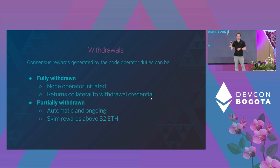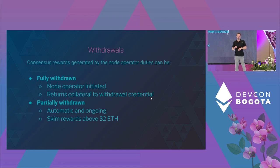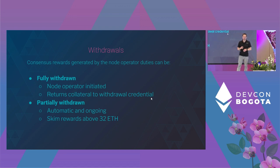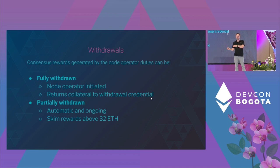A disclaimer: the information on this slide is not final — the Capella specification is still being drafted, but this is what it looks like. After the Shanghai hard fork, consensus rewards will be fully withdrawable or partially withdrawable. A full withdrawal is a node operator initiated thing — a node operator submits an exit message, it gets processed by the beacon chain exit queue, they come into a withdrawable state, and then their funds are returned to a withdrawal credential. At that point they are no longer validating.